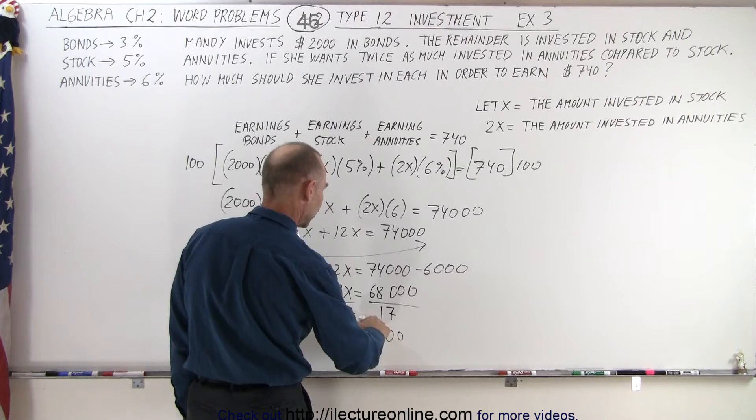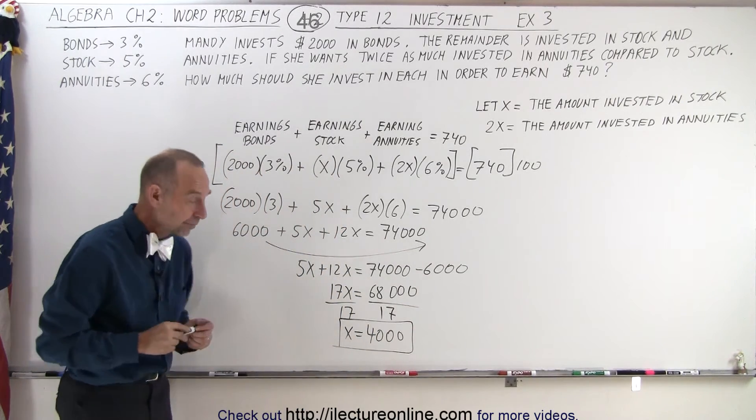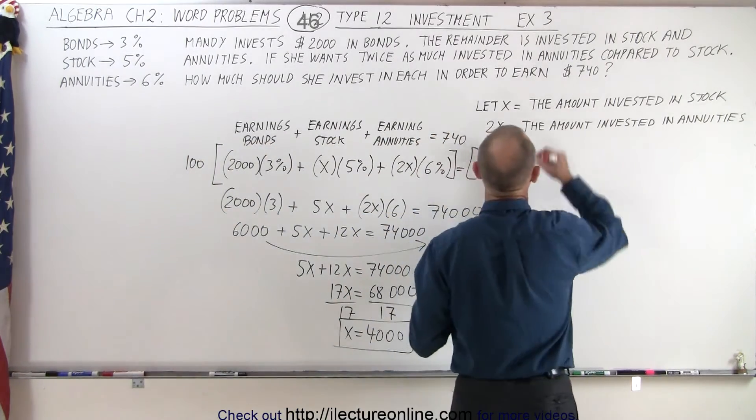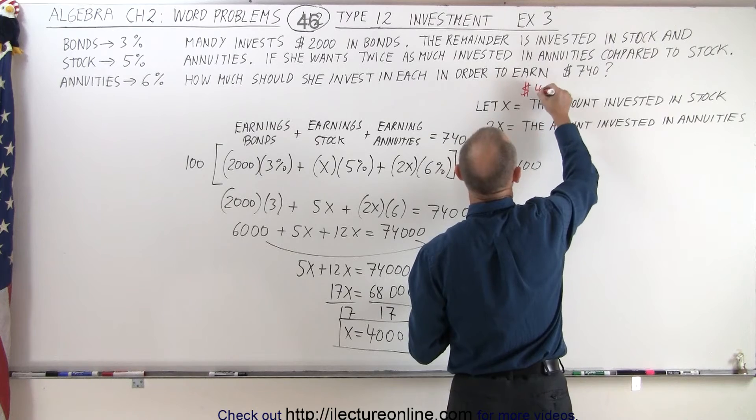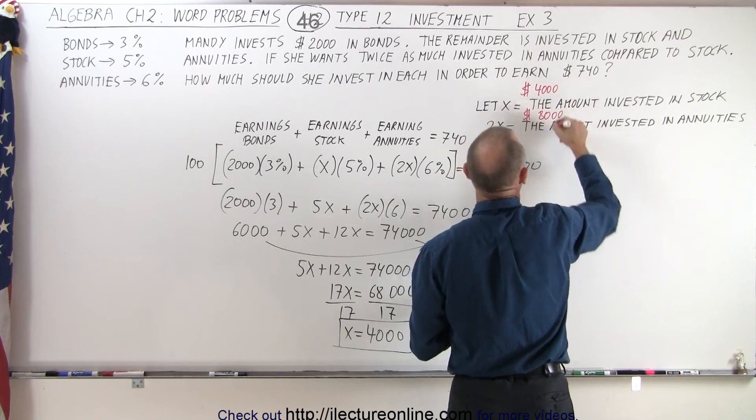X equals 4,000. Now, what does that mean? Well, going back over here, that means we should invest $4,000 in stocks and twice as much, $8,000, in annuities.